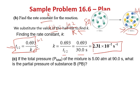In part C, if the total pressure in the mixture is 5 at 90 seconds, what is the partial pressure of substance B? Note that 30 seconds is the first half-life, 60 seconds is the second, and 90 seconds is the third half-life.